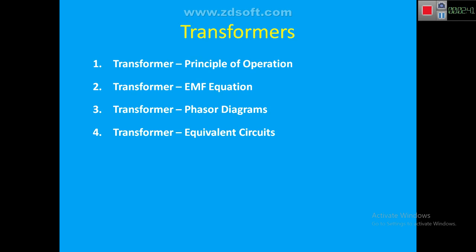In equivalent circuits there are around 8 to 10 types. First is the exact equivalent circuit without exciting current, second is the exact equivalent circuit, then equivalent circuits referred to primary and referred to secondary, and finally simplified approximate versions of the equivalent circuits — all these will be discussed in the video on transformer equivalent circuits.